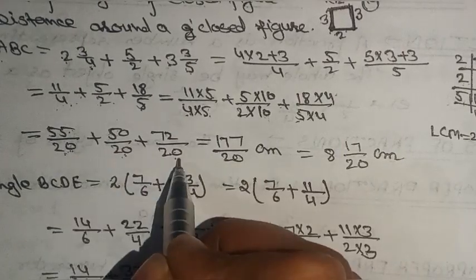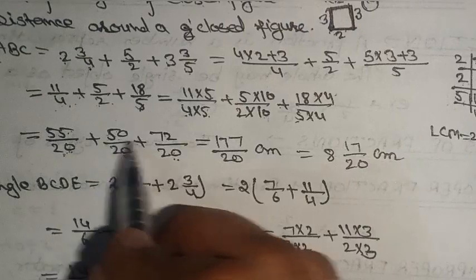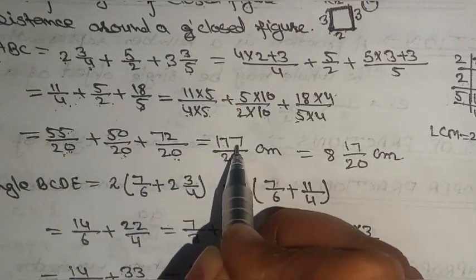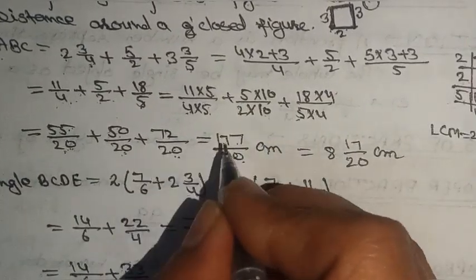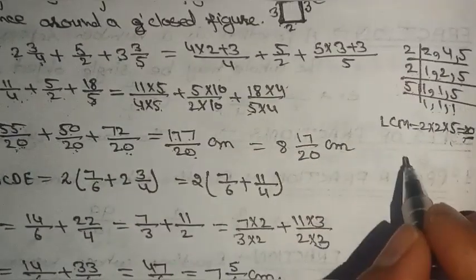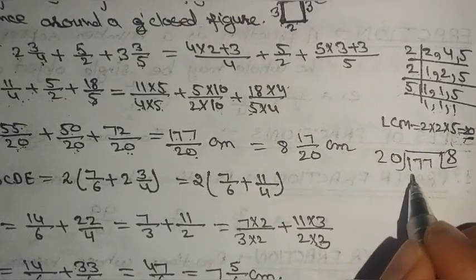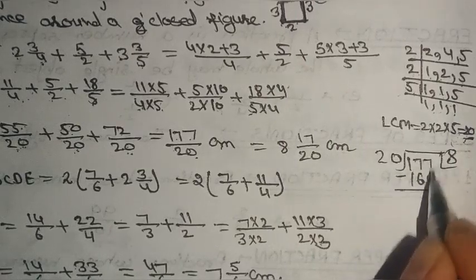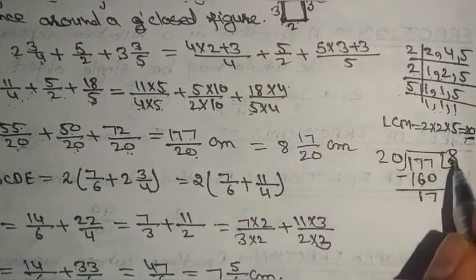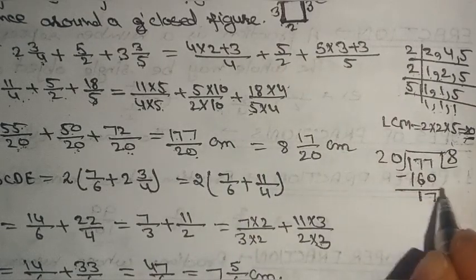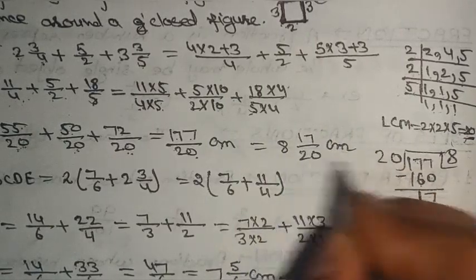Since the denominator is the same, we add the numerators: 55 + 50 + 72 = 177. Dividing 177 by 20: 8 times 20 is 160, remainder is 17. So as a mixed fraction, the perimeter of the triangle is 8 and 17/20 centimeters.